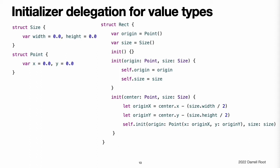The third Rect initializer, init(center:size:), is slightly more complex. It starts by calculating an appropriate origin point based on a center point and a size value. It then calls, or delegates, to the init(origin:size:) initializer, which stores the new origin and size values in the appropriate properties. It is more convenient and clearer in intent for the init(center:size:) initializer to take advantage of an existing initializer that already provides exactly that functionality.